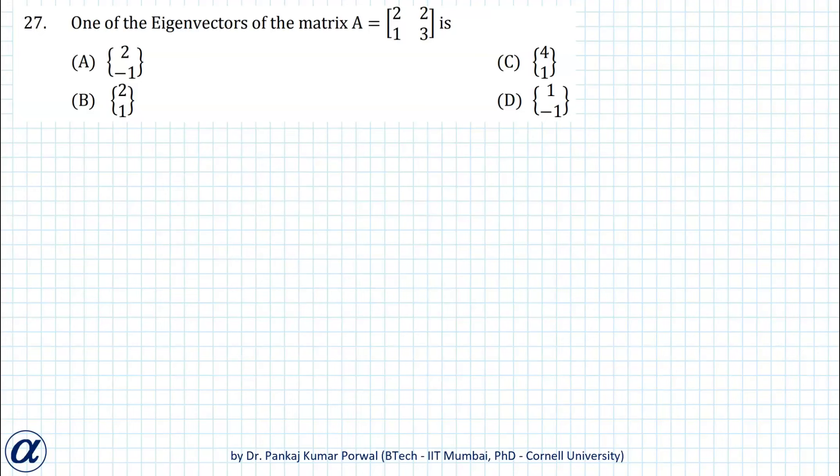Here we want to find one of the eigenvectors of matrix A. Rather than using the long method, we will use properties of eigenvectors and eigenvalues. In particular, we will use the first property that A times x equals lambda x. Our matrix A is [2,2; 1,3].